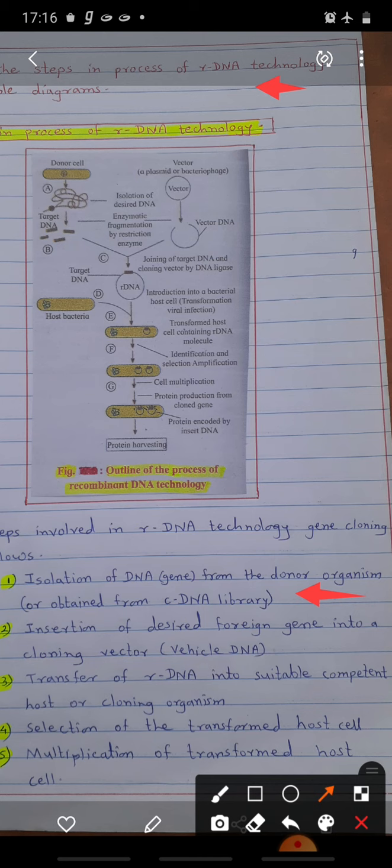Second, insertion of desired foreign gene into cloning vector, which means vehicle DNA. Third, transfer of rDNA into suitable host or cloning organism. Fourth step, selection of transformed host cells. And the last step, multiplication of transformed host cells.